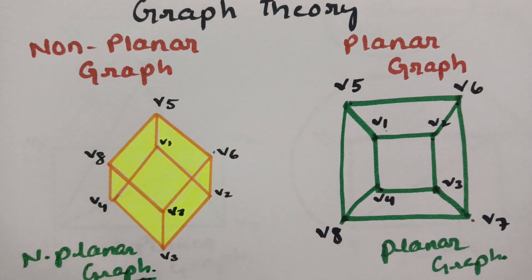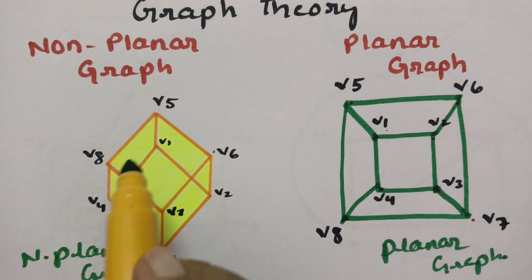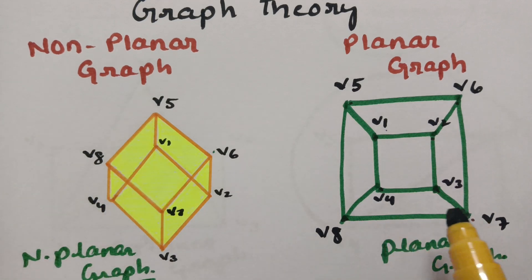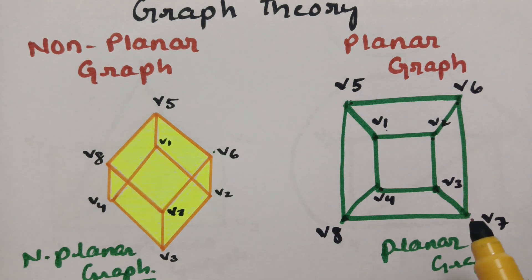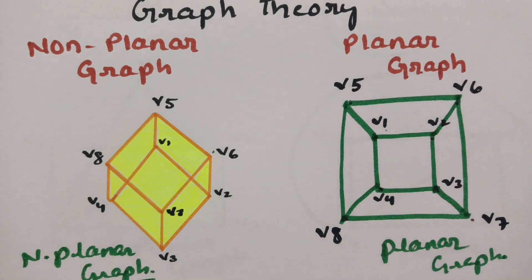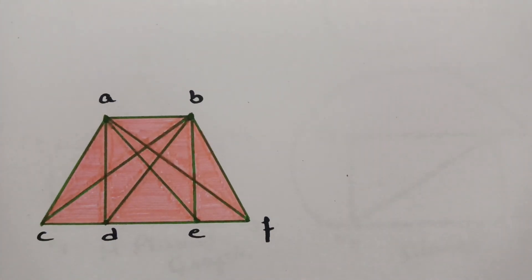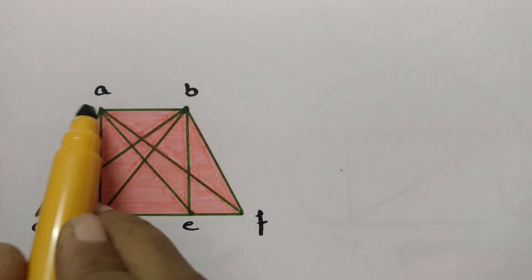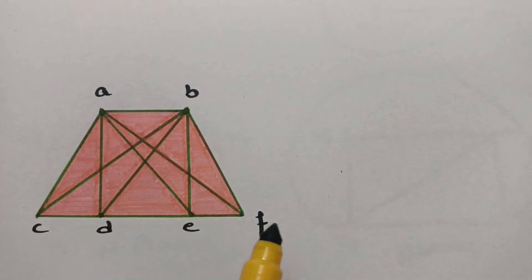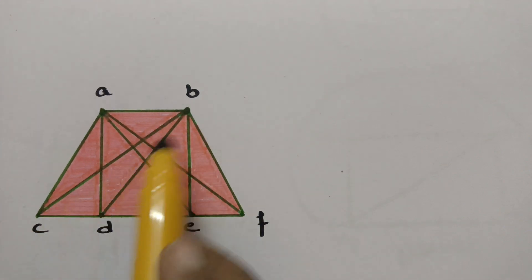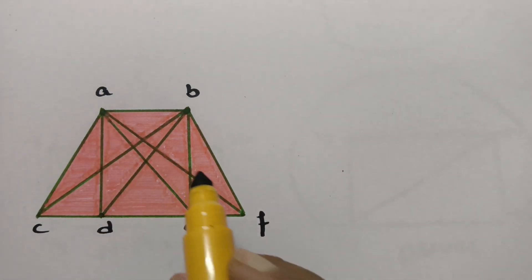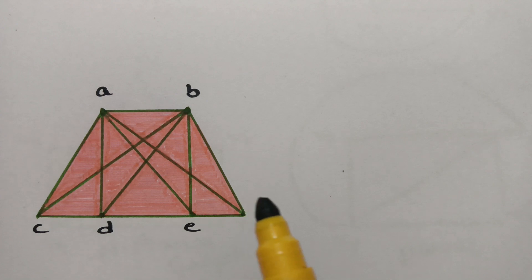To summarize: wherever two edges intersect we say the graph is non-planar, whereas if there is no edge crossing or crossover of edges we say the graph is a planar graph. The next example is a complete bipartite graph.